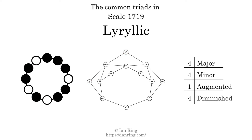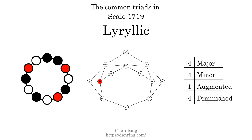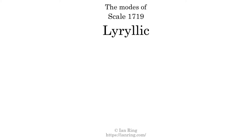Here is a Hamiltonian path of parsimonious voice leading that uses all the triads. This scale has 8 modes. The first mode is itself. The second mode is Scale 2907, also known as Megalobot 2. It sounds like this.